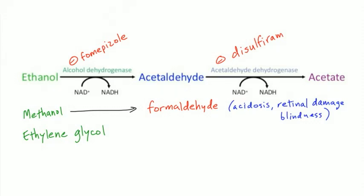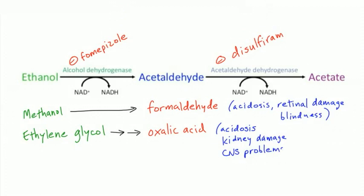Fomepizole also treats ethylene glycol (antifreeze) poisoning. Antifreeze tastes sweet, so kids and pets may drink it. Ethylene glycol metabolizes to oxalic acid and other organic acids, causing a high anion gap metabolic acidosis — remembered by the mnemonic MUD PILES, where M is methanol and E is ethylene glycol. It also causes kidney damage, CNS problems, and heart and lung toxicity. Especially remember kidney damage: oxalic acid precipitates as calcium oxalate crystals in the kidney. Treatment: fomepizole or ethanol to compete for the enzyme.